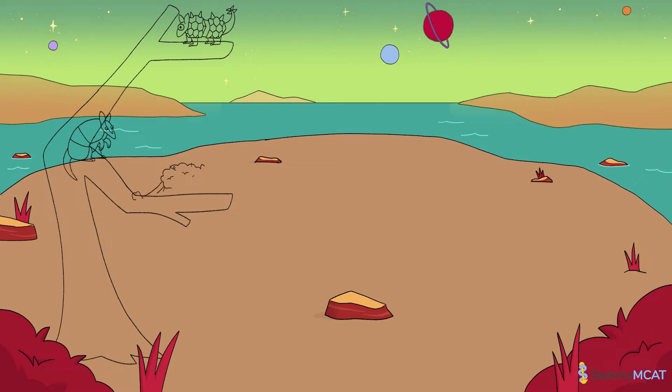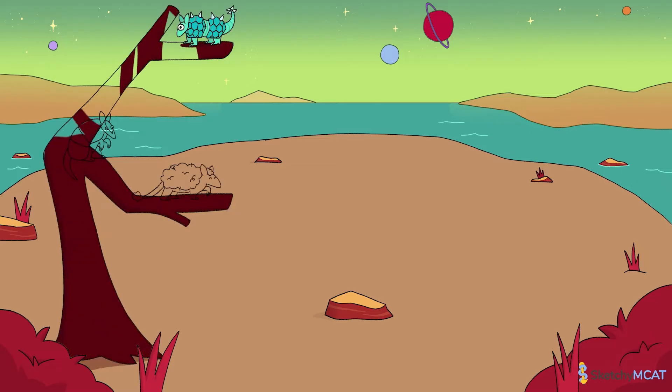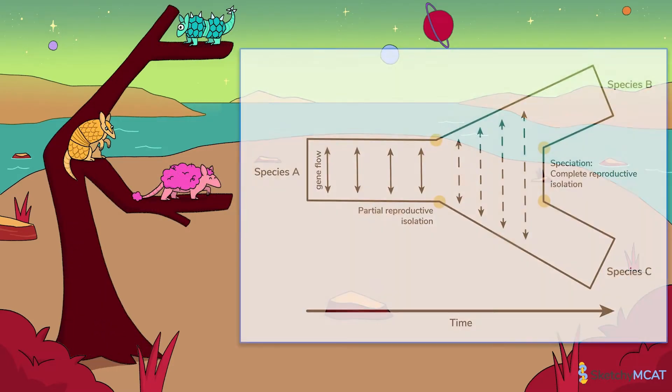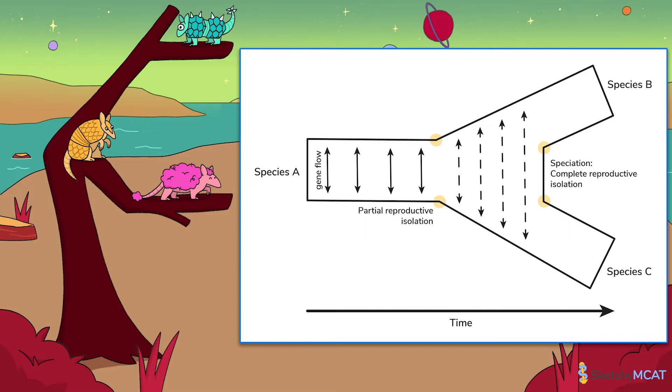When two populations achieve reproductive isolation, they're classified as separate species. Looking backwards in time with genetic information and fossils, scientists can estimate when two populations were similar enough to be classified as a single species.